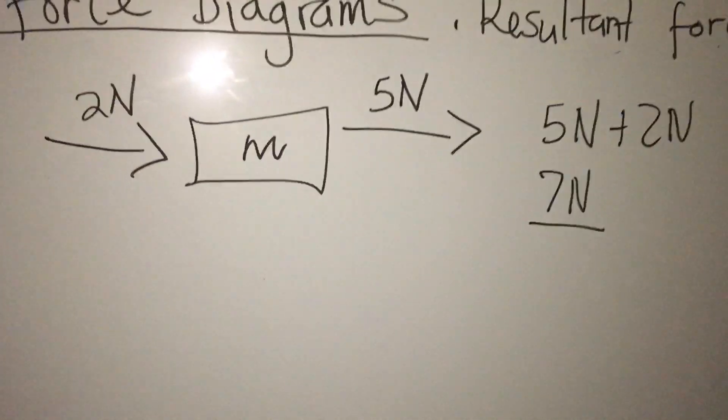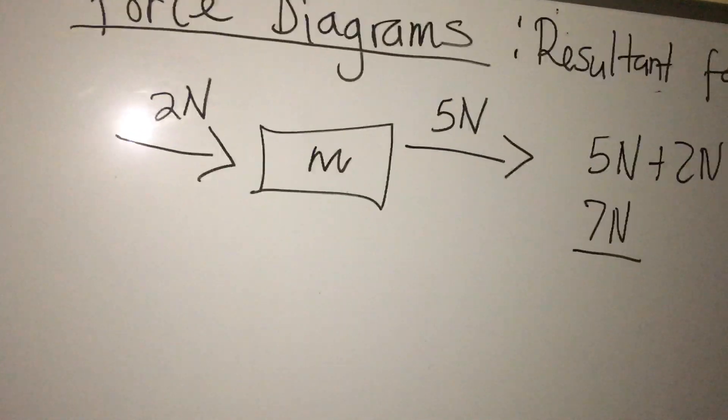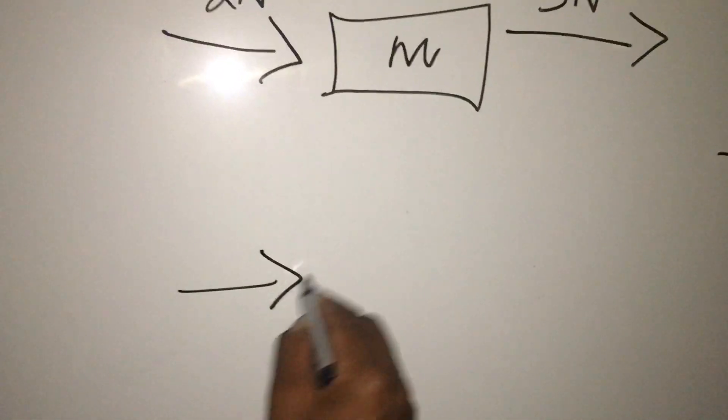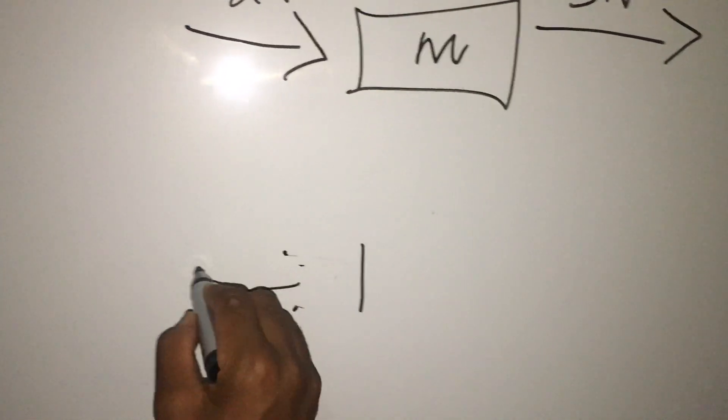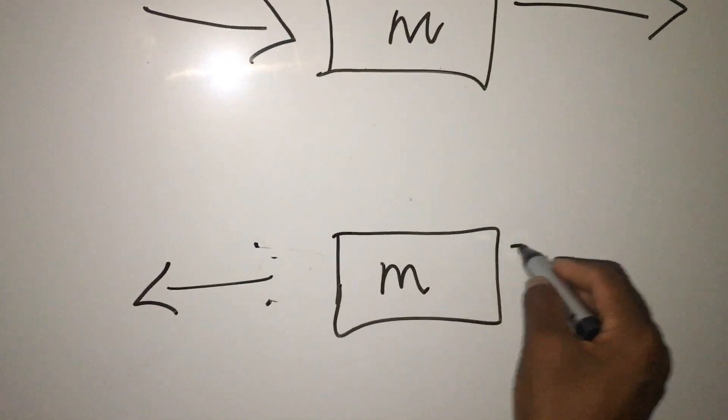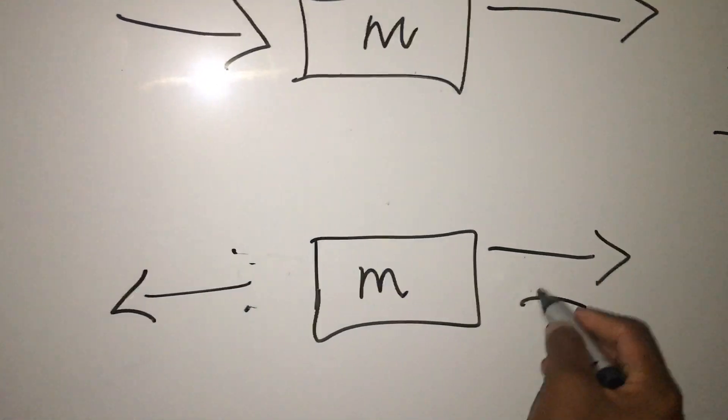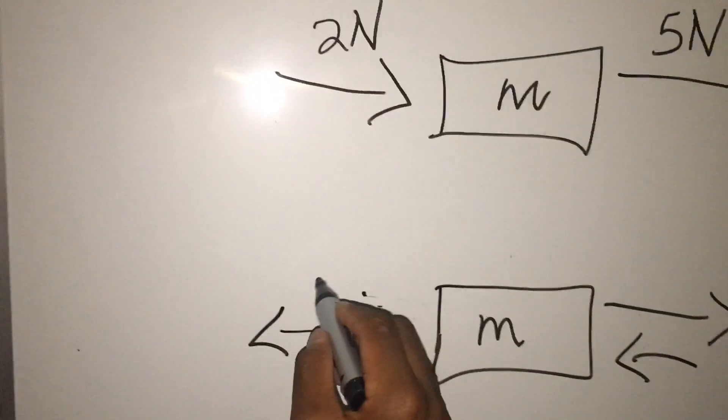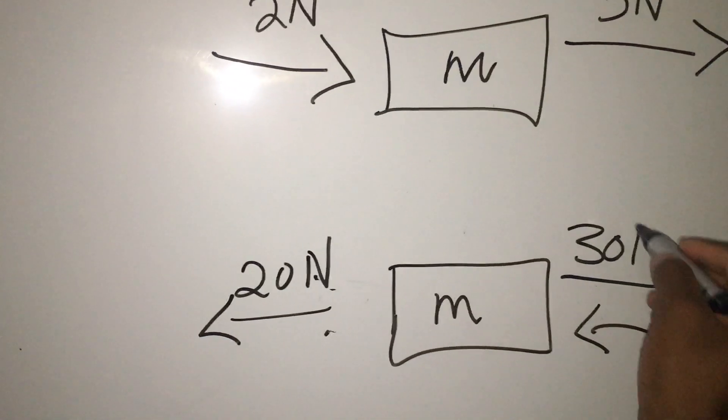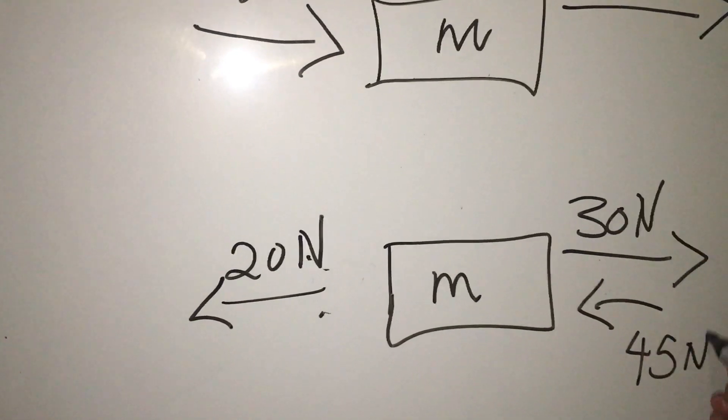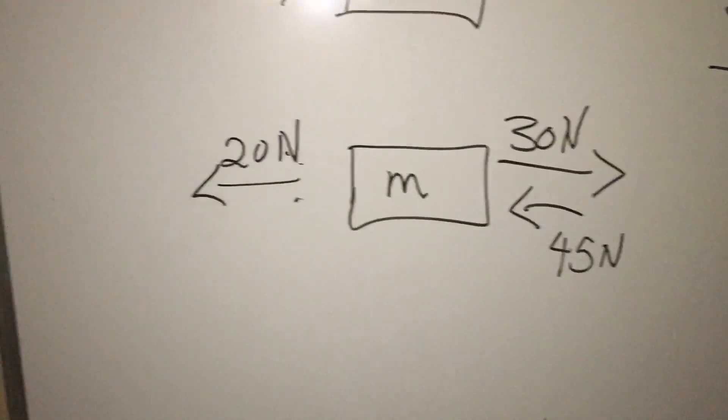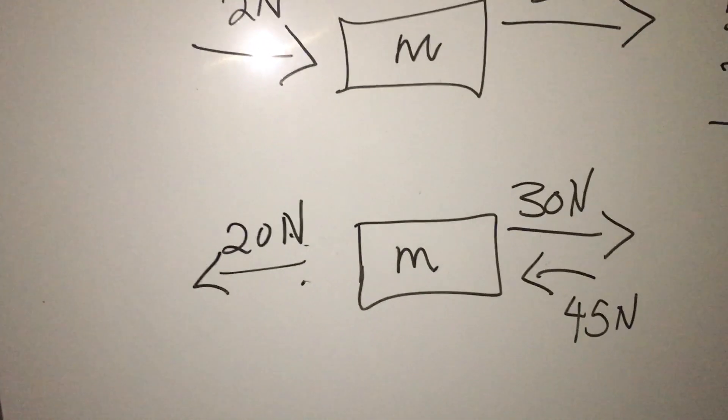Can you see? Okay. Let me give you this: we have a mass and forces acting that way. This is 20 newtons, and this is 30 newtons, and this is 45 newtons. We are asked to find the resultant force there. How do we find resultant force?